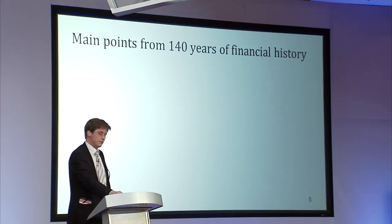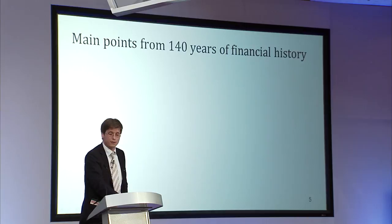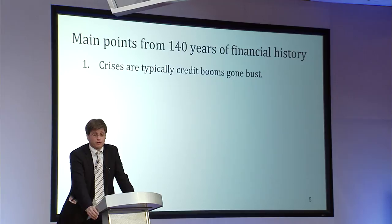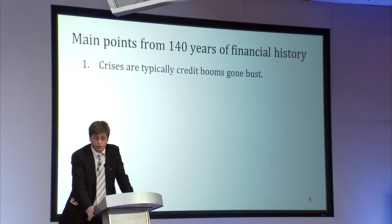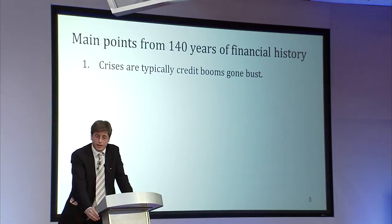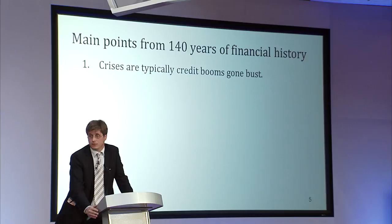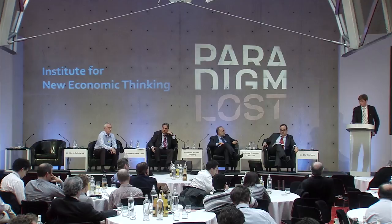Looking at the crisis incidents and the long-run credit data together, what are the key findings? First, crises are typically credit booms gone bust. This is not an entirely new story, though we are probably the first to document it using these long-run data. Bill White and Claudio Borio have done empirical work on that, and others as well. But I think there is now, on the basis of these long-run data, relatively sound and clear evidence that crises can be viewed as credit booms gone bust.